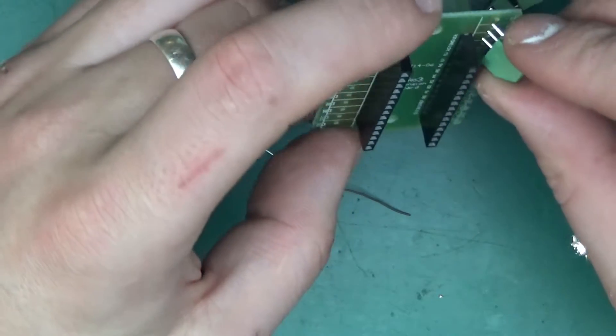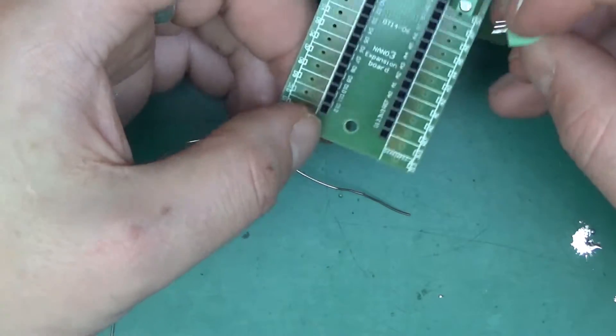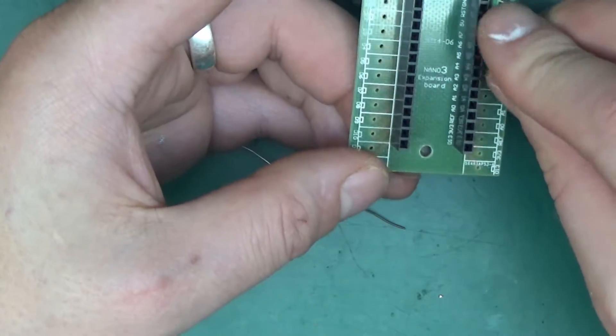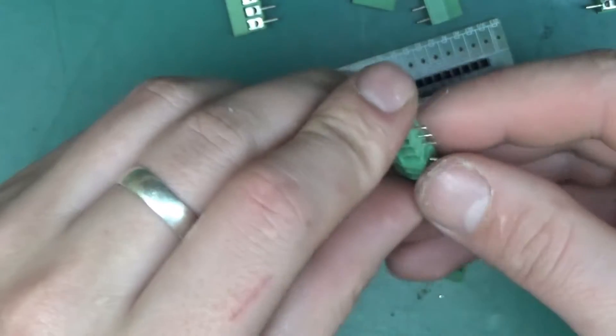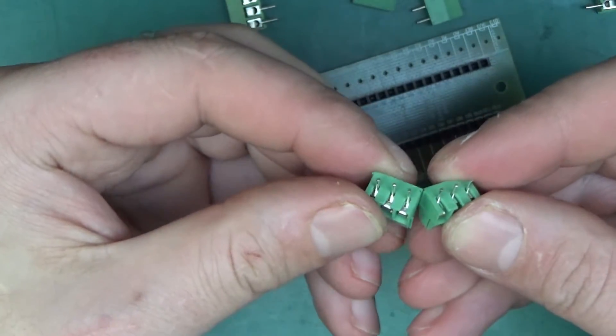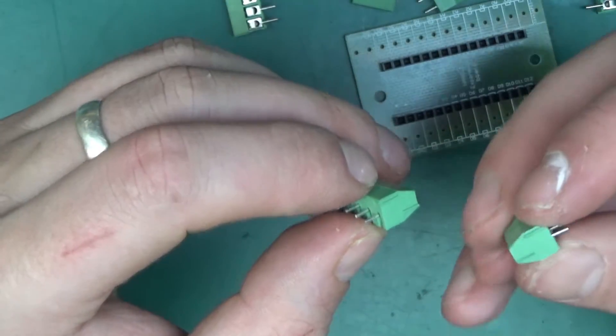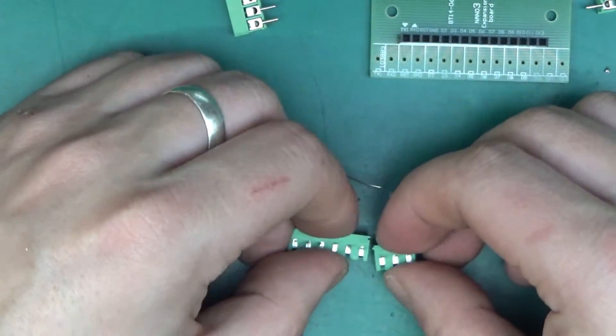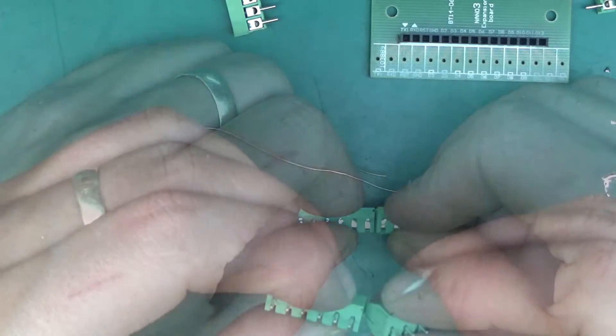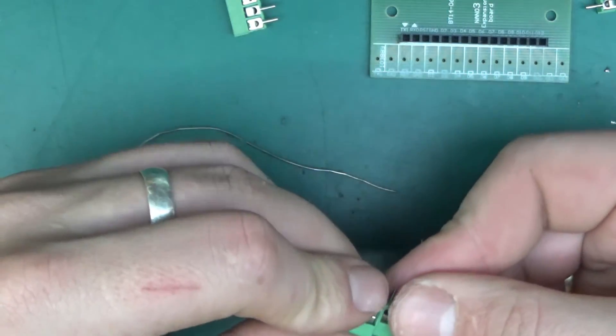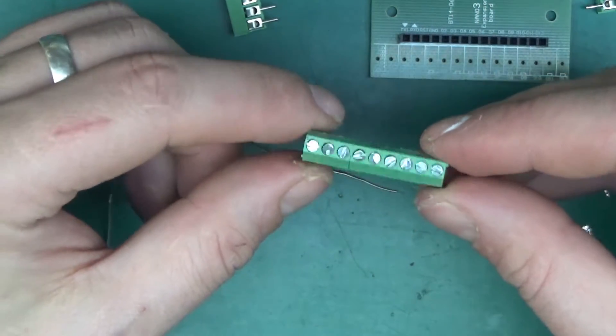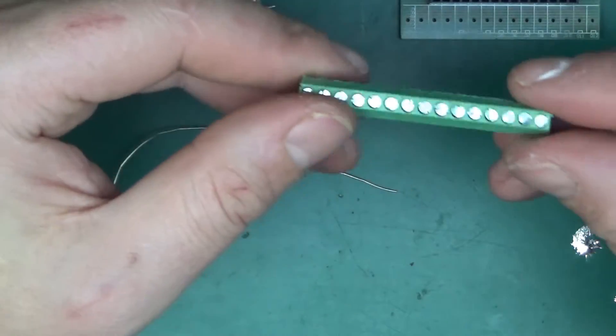So now the terminals, just put them in the right way. Actually it might be easier to couple them beforehand. So those terminals have got little ridges and little slots on the side, and if you do it right they should couple nicely, which is a little bit fiddly. But when they do, they hold together which makes it easier to solder a longer row. So that's one set.